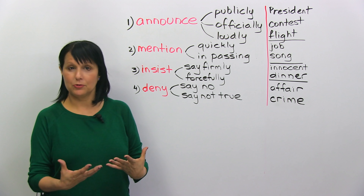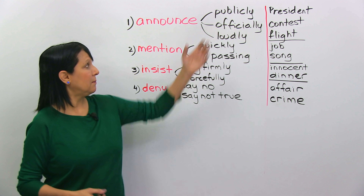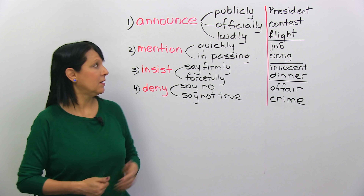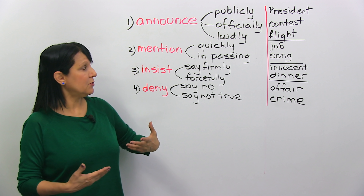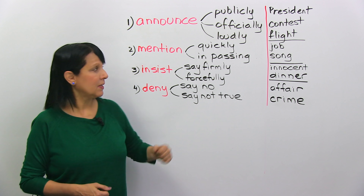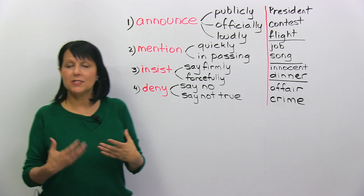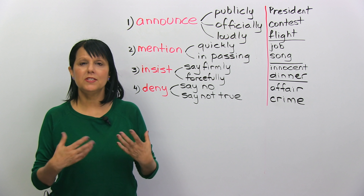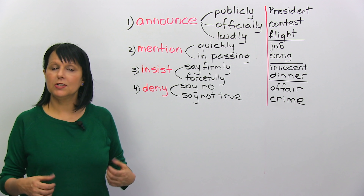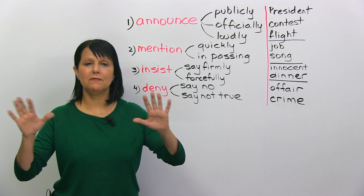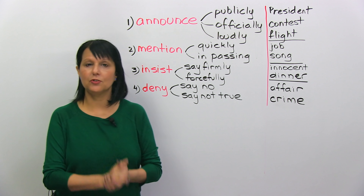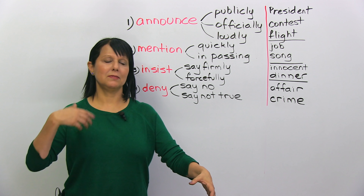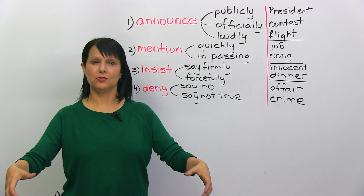The first word is 'announce.' When we announce something, we say it publicly. For example, he announced that he was running for president. We can also announce something officially — he announced that she had won the contest. Or we announce something when we say it loudly, for example, they announced that the flight was ready for boarding. Think of a president standing at a podium making an announcement — saying something official.